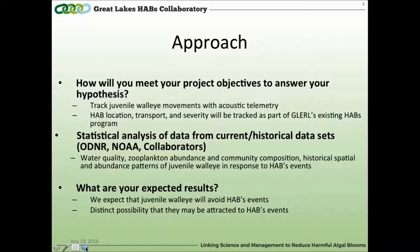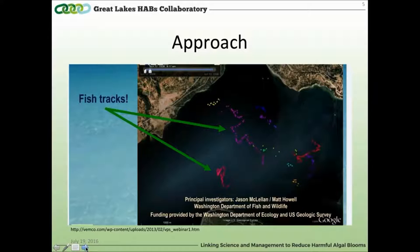As for expected results, we would expect juvenile walleye to avoid HABs events, but there's a distinct possibility they may actually be attracted to them — these events could potentially provide juvenile walleye refuge from visual predators, or could congregate juvenile walleye prey by providing an ecotone that attracts them. Using the Vemco VPS positioning system, we can ascertain fine-scale fish movements, with individually coded transmitters allowing individual fish tracks to be overlaid on Google Earth and compared to daily HABs severity.